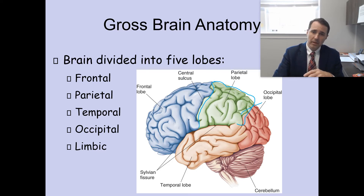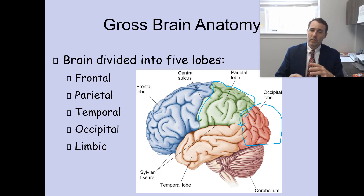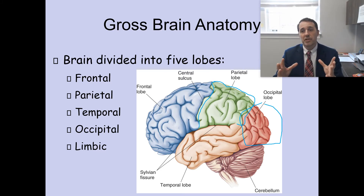The occipital lobe is in the back of the brain. When you think occipital lobe, think vision — this is the part of your brain that receives information from your eyes and processes that visual information.